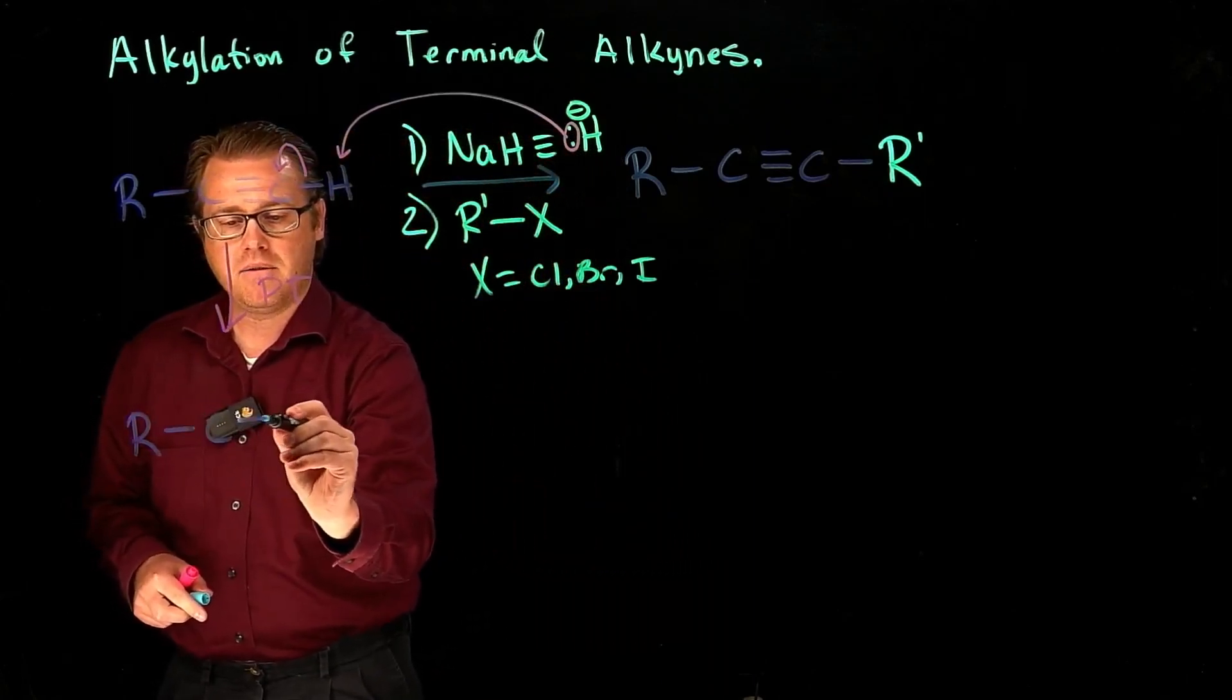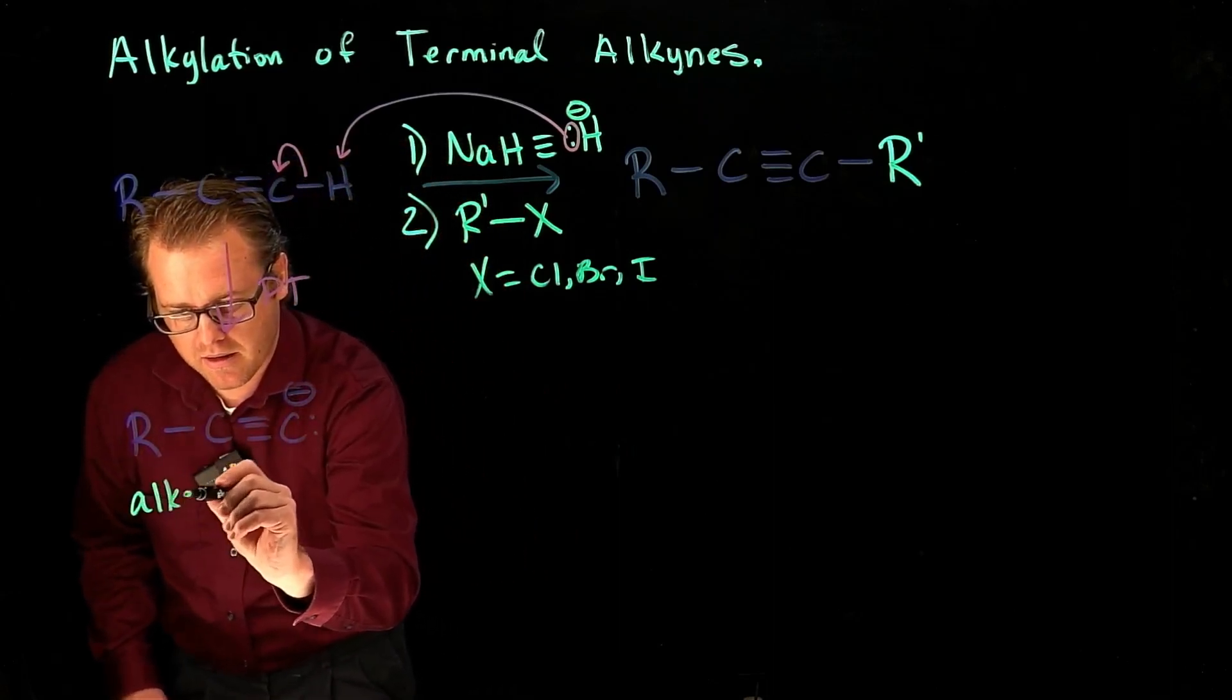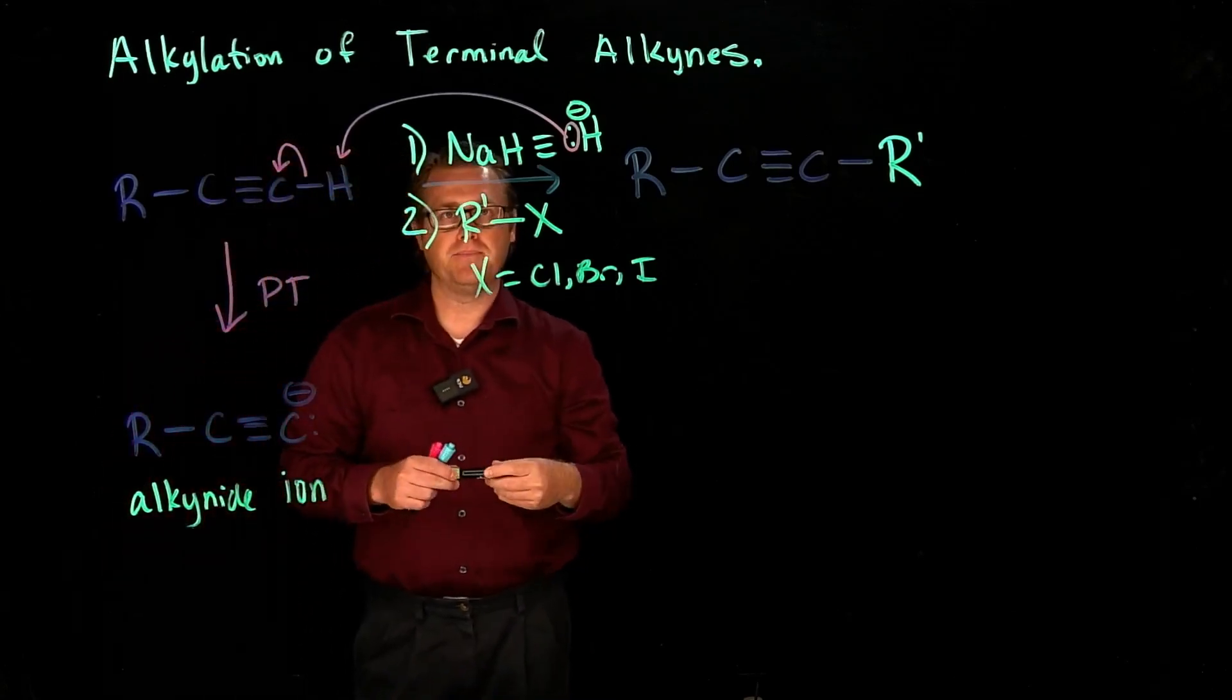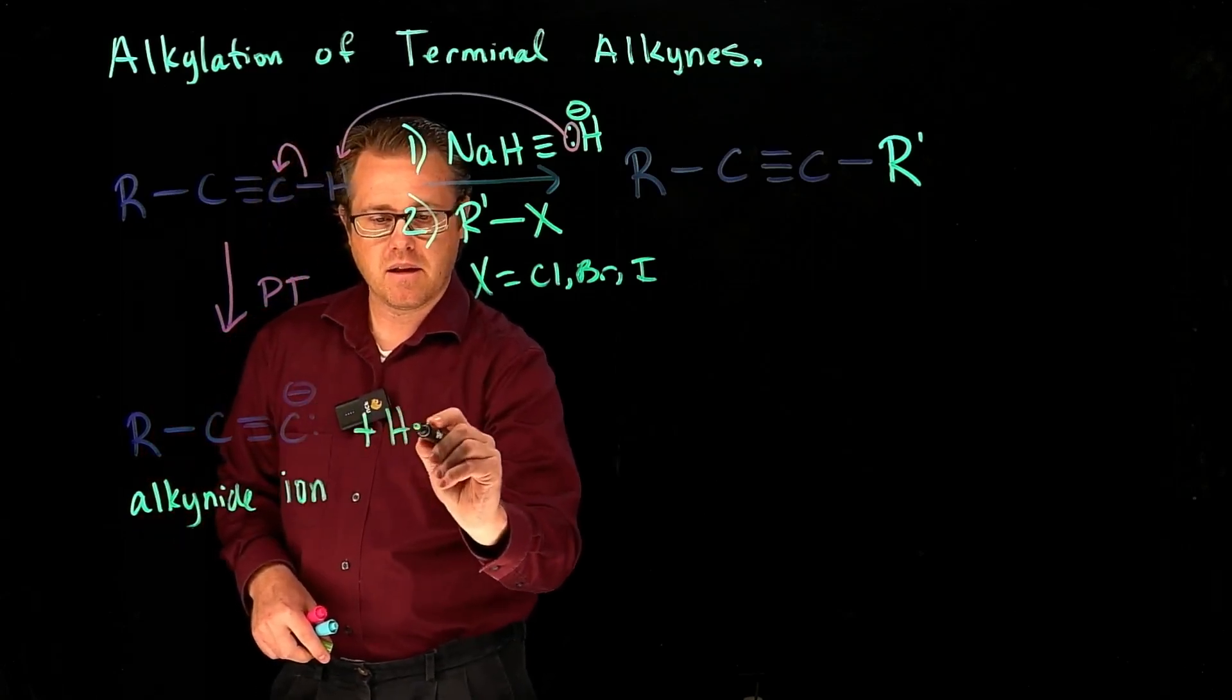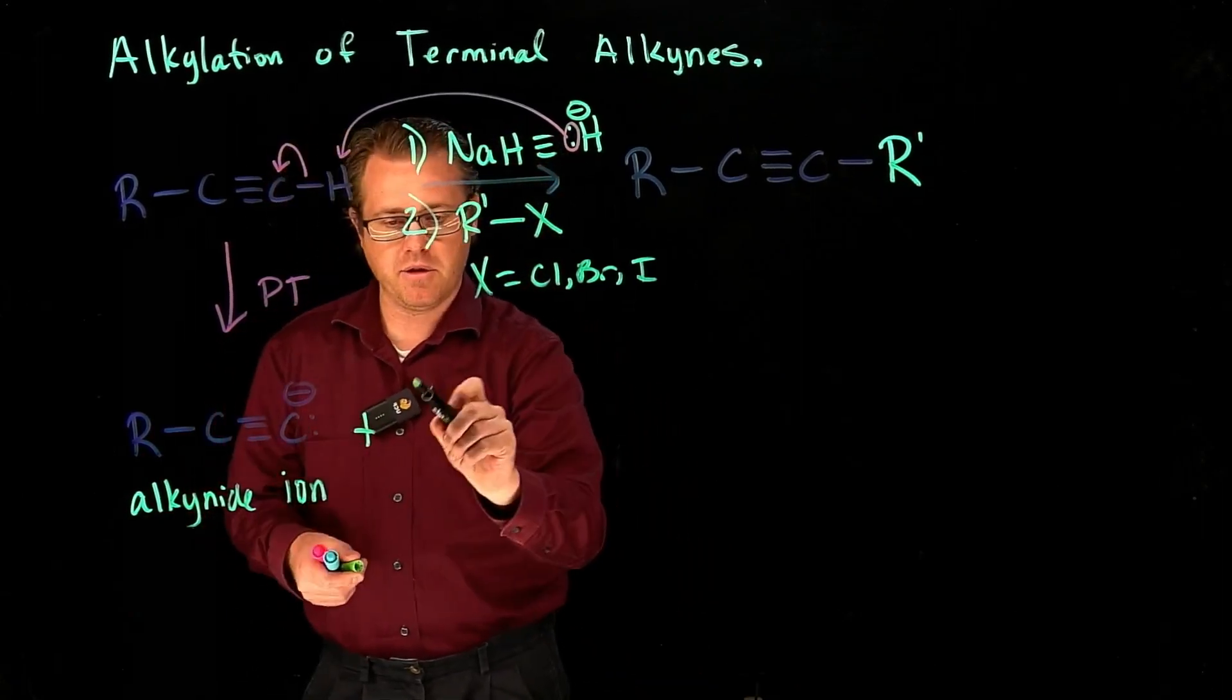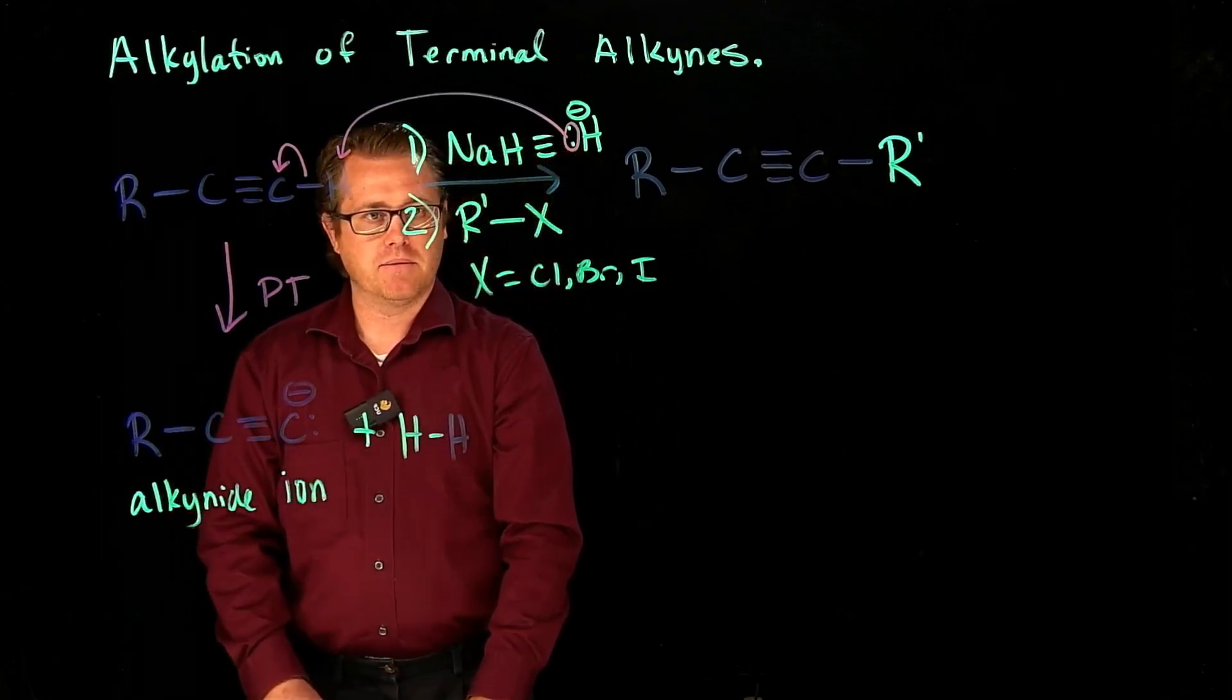So now we're going to have this right there. And that is called alkynide. Let's make sure I spell it right here, and that's the alkynide ion. What's also on this side here, plus H2 gas, that hydrogen, abstracting that hydrogen is going to make hydrogen gas. So if we wanted to color code it, it would look like this, like that, hydrogen gas, H2. So that is step one, right there.